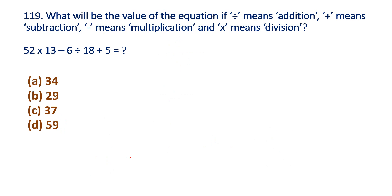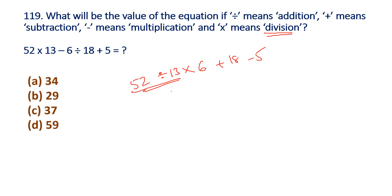Question 119: Multiplication place is division. So 52 divided by 13, minus place is multiplication, beta is 6. Division place is addition, plus 18. Plus place is minus 5. Calculation: 52÷13=4, 4×6=24, 24+18=42, 42−5=37. So option C is the answer.